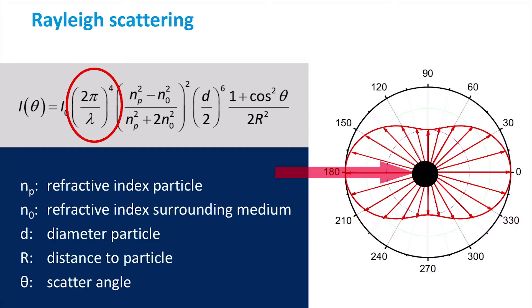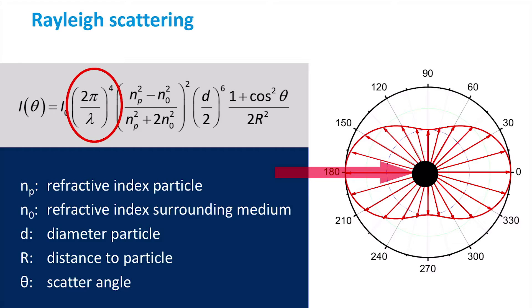Furthermore, we can gather from the first part of the equation that Rayleigh scattering is strongly wavelength dependent. The intensity scattered towards a certain angle depends on 1 over the wavelength to the power 4.